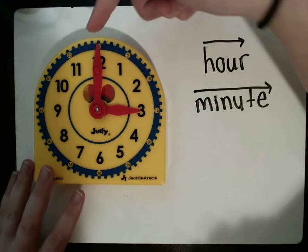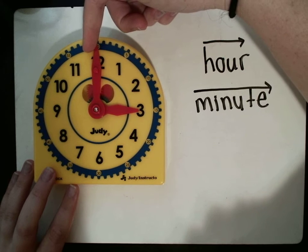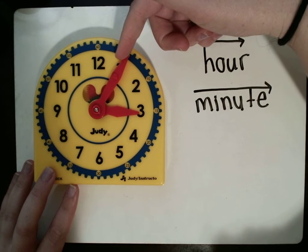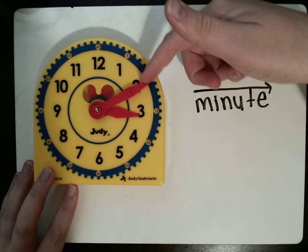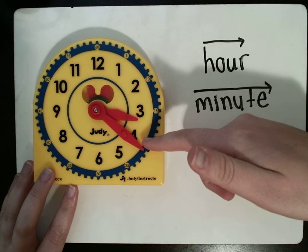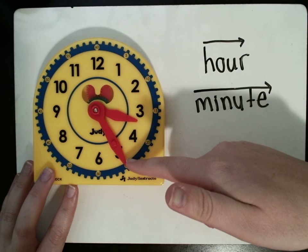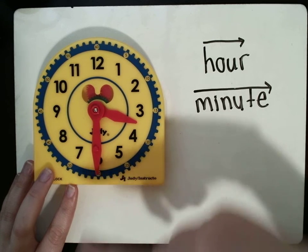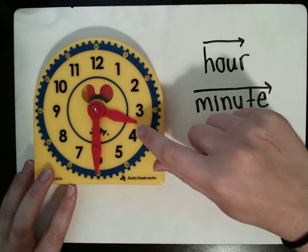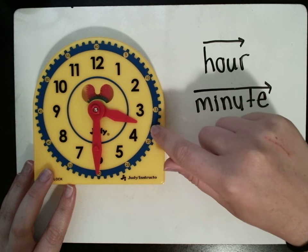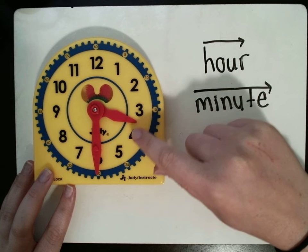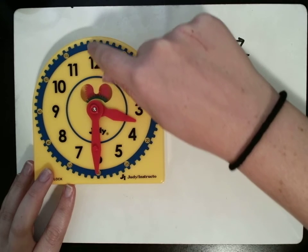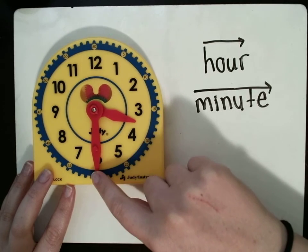So, we have 3 o'clock, 3:05, 3:10, 3:15, 3:20, 3:25, 3:30. I'm going to stop there for a second. Notice that the hour hand is right between the 3 and the 4. It's halfway between. That's because the minute hand has gone halfway around the clock.